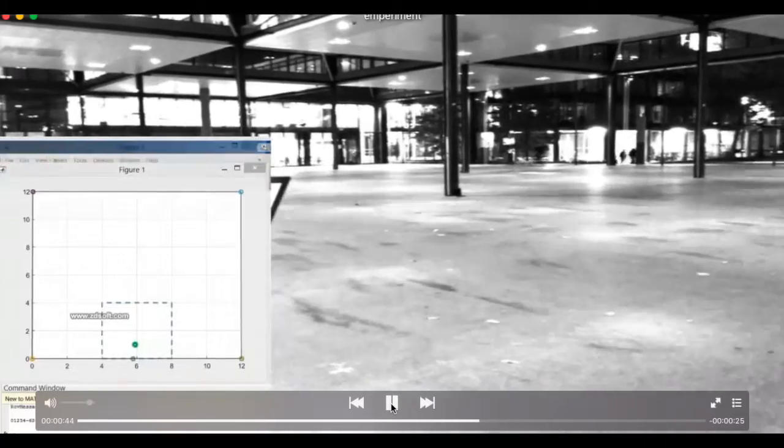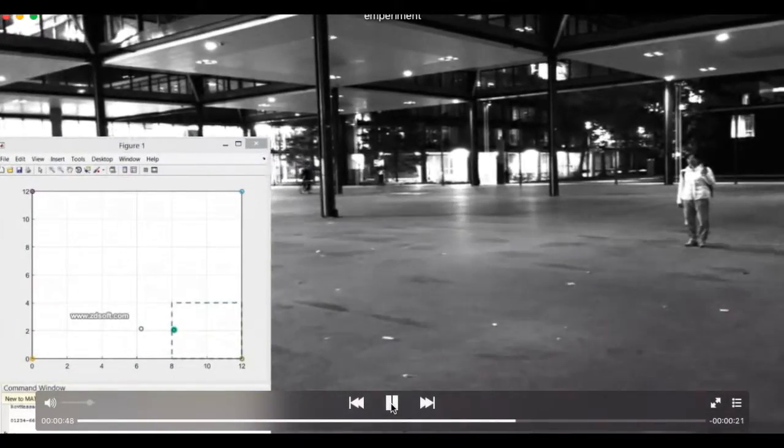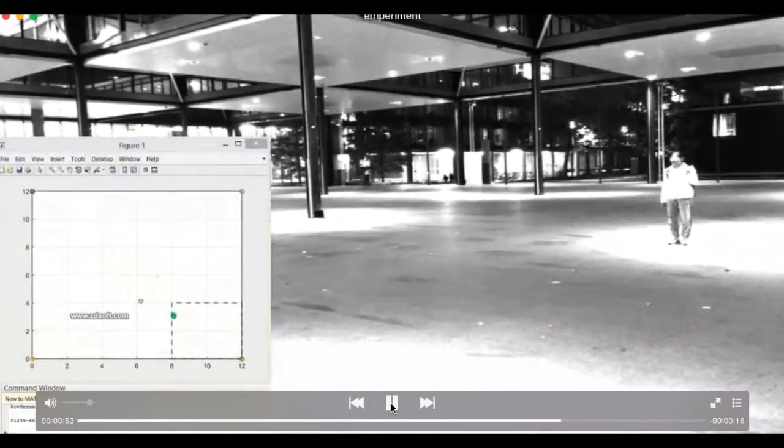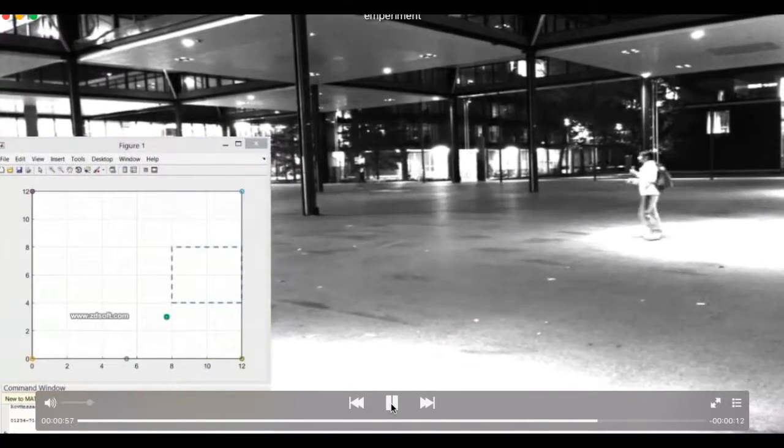Then it moves to coordinate 10,2. Fingerprint locates it correctly, but trilateration is 4 meters out to the left. So the hybrid algorithm yields coordinate 8,2.